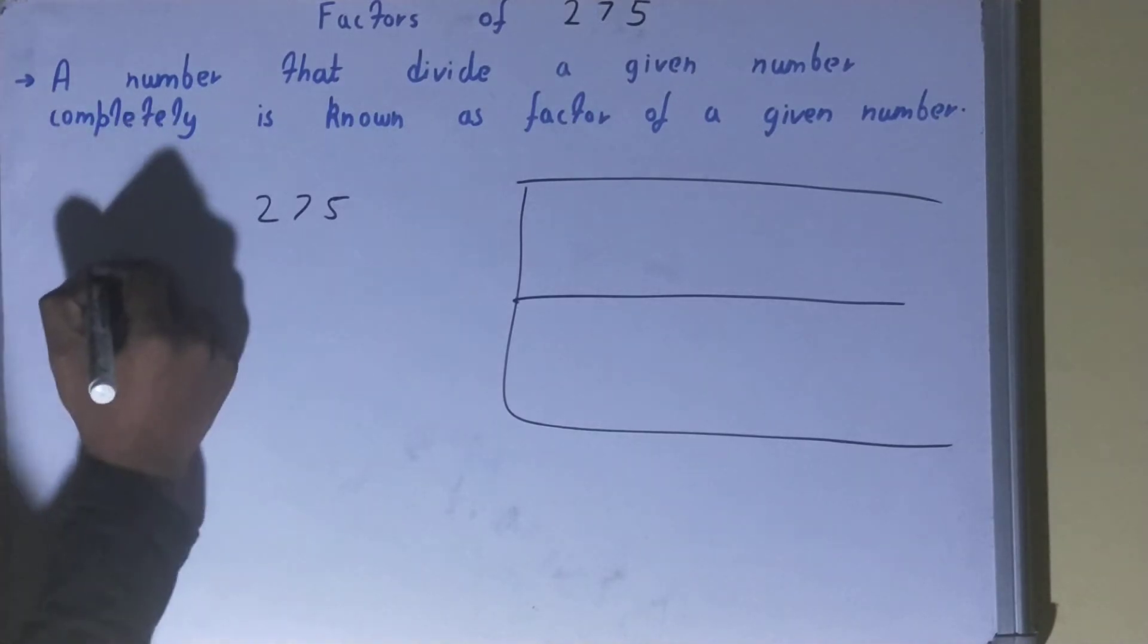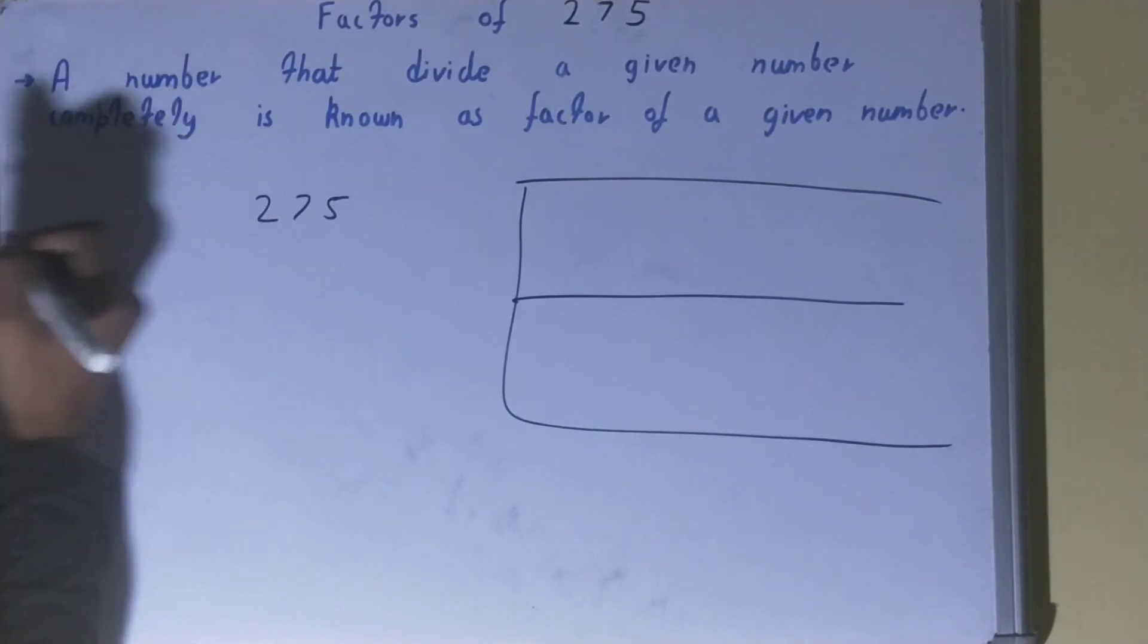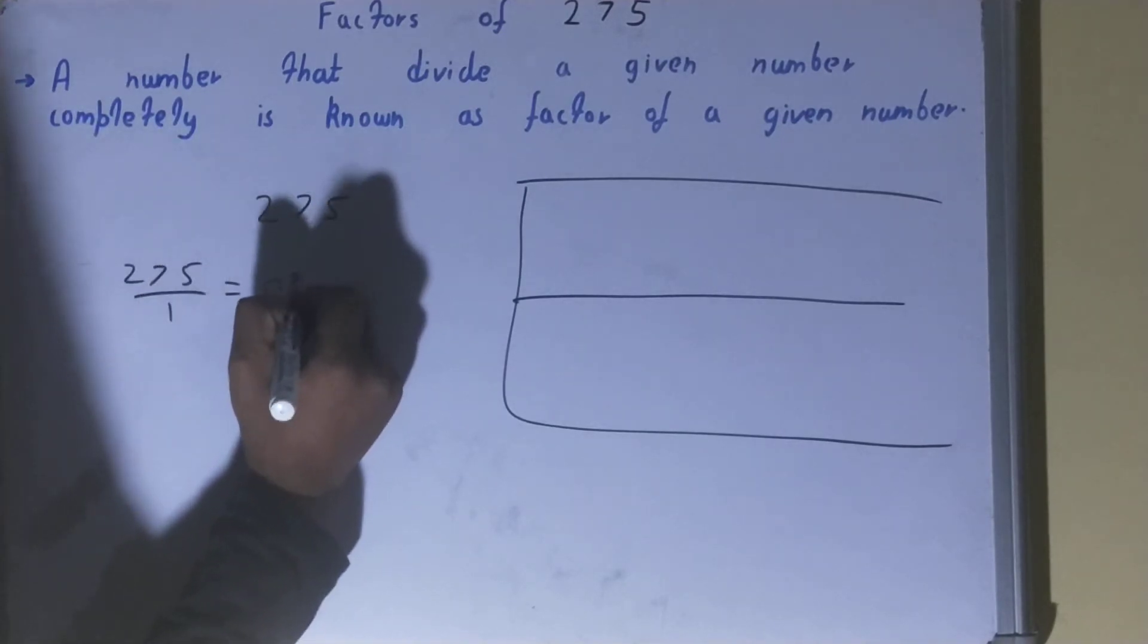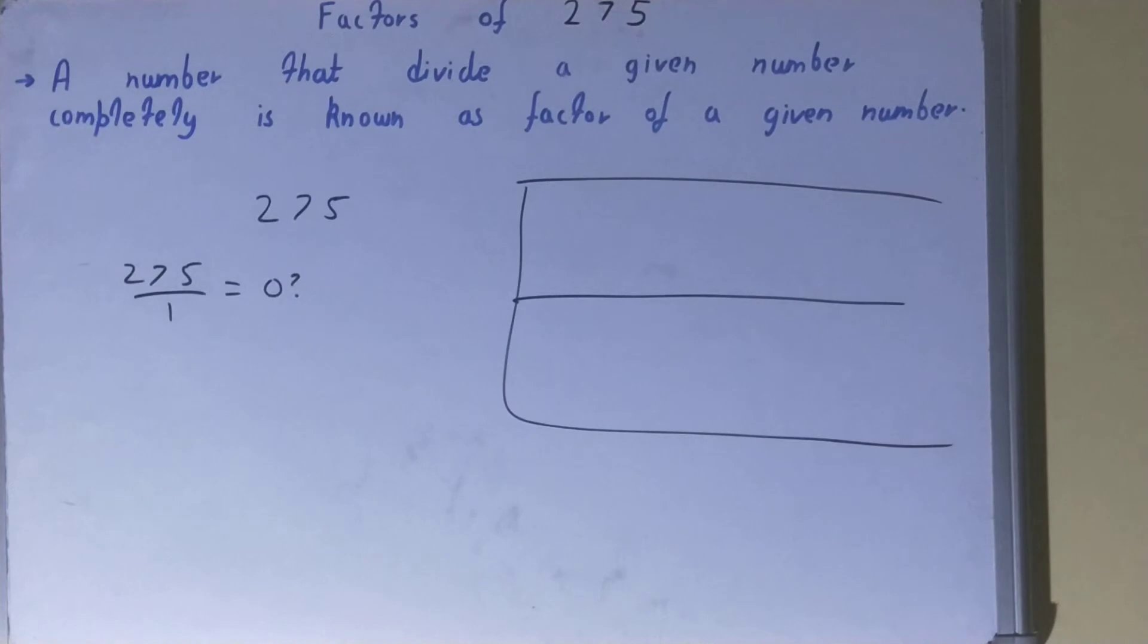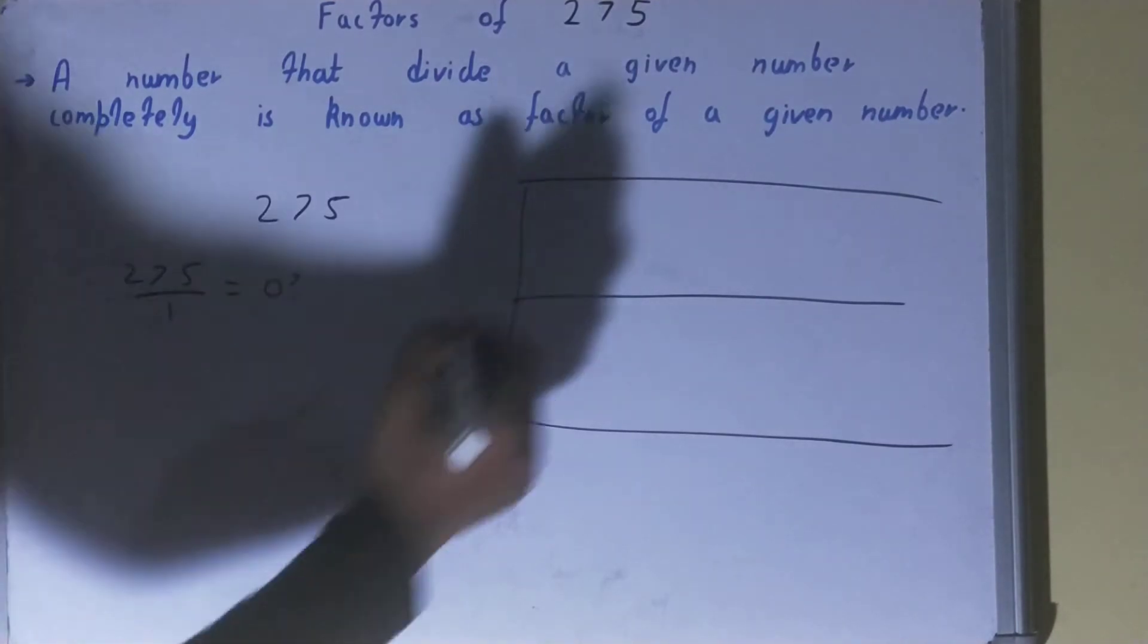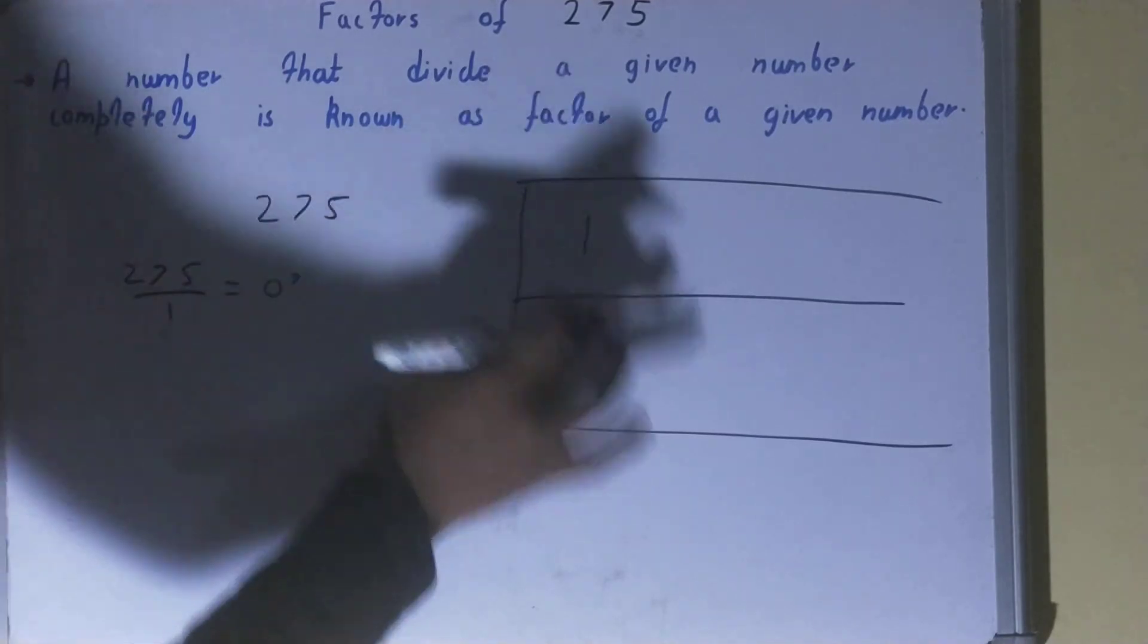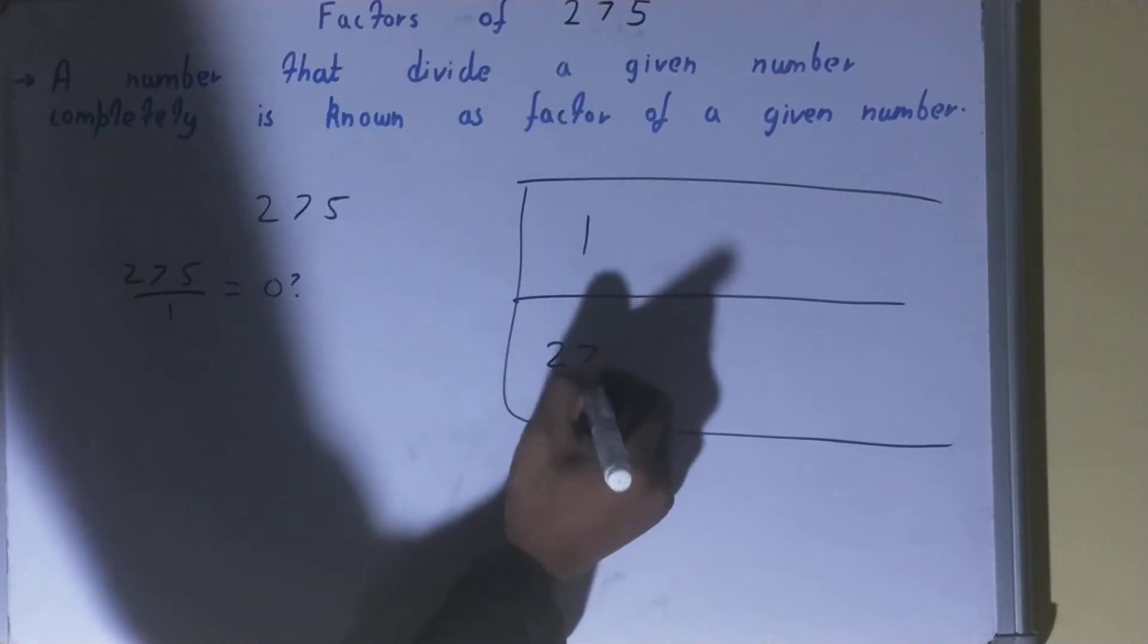That is 1. Divide the number 275 by 1. If you do so, will you get the remainder as 0? The answer is yes. Because you'll get the remainder 0, you can say 1 is the factor of 275. So 1 we can write over here in the factor list. And with the help of this one, we can find out that 1 times what is 275? 1 times 275.